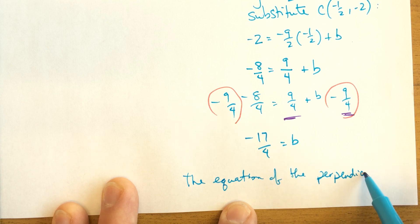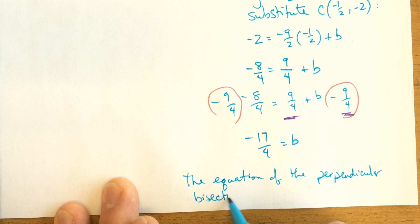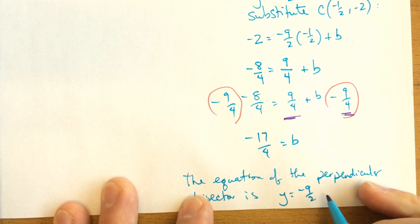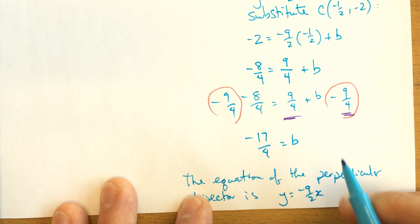Then the equation of the bisector, the perpendicular bisector, is Y equals, the slope is negative nine halves times X, and then plus B, but B is negative so I'll write minus seventeen quarters.